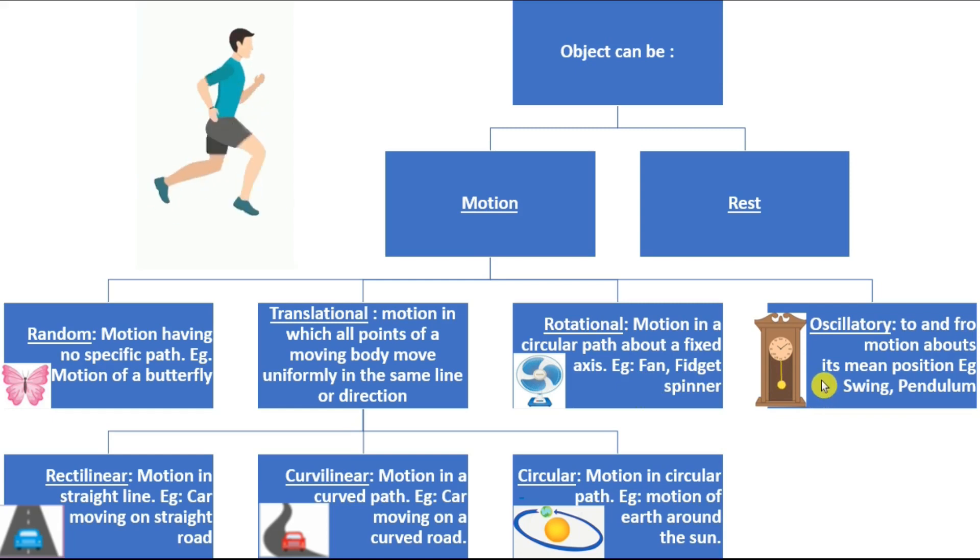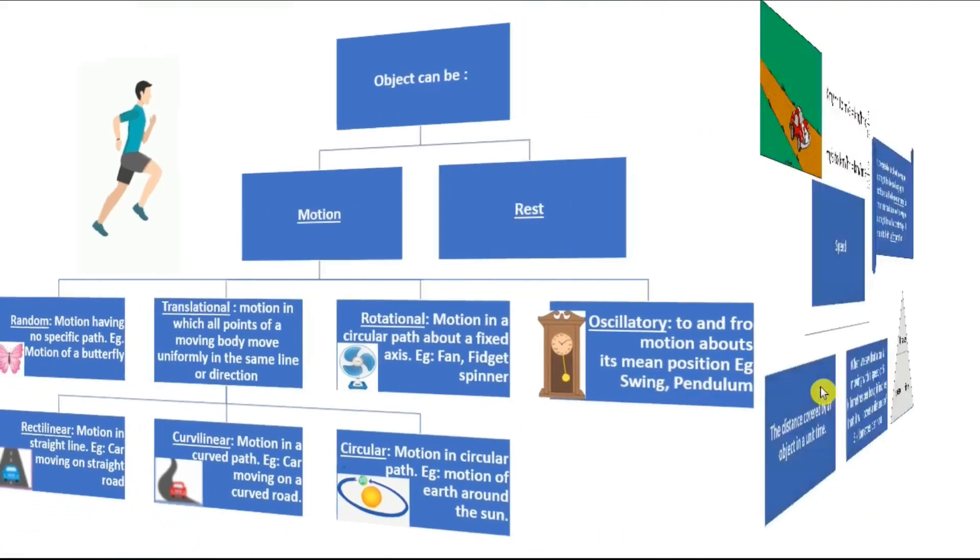Then the oscillatory motion. In this chapter, we are going to focus the most on oscillatory motion, because the previous motions we have learnt in class 6. Oscillatory motion is the to and fro motion about the mean position. The mean position is the center point. The example of oscillatory motion is a swing or a pendulum.